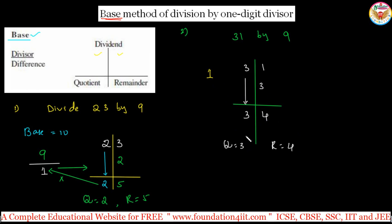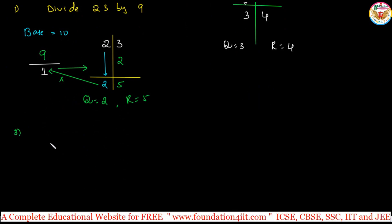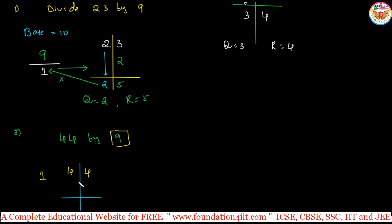We are only finding the quotient and remainder — not doing decimal division — with one-digit divisor. Let us take one more example: 44 divided by 9. Base is 10, difference between base and divisor is 1. Take 44, draw a line. Take this 4 as it is down, then 4 times 1 is 4. Add: 4 plus 4 is 8. So 4 is the quotient and 8 is the remainder.